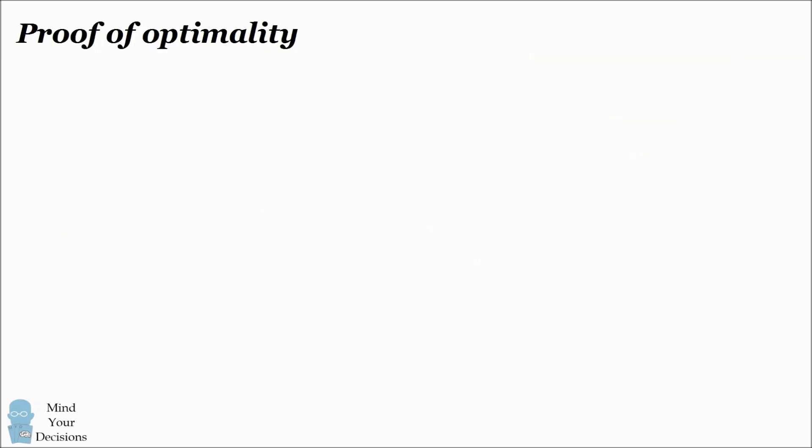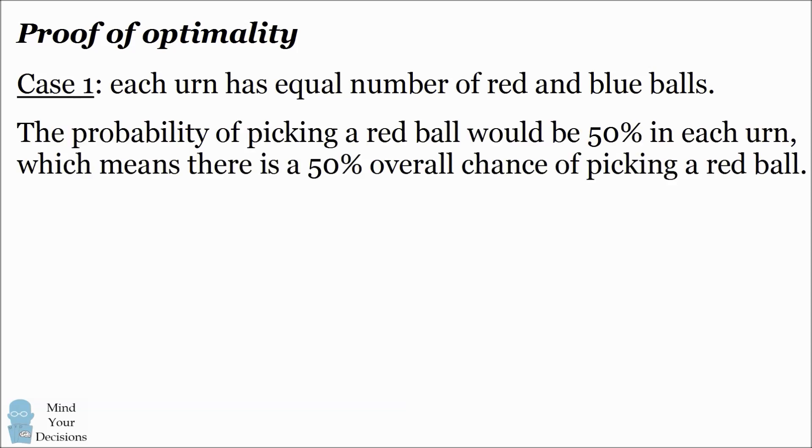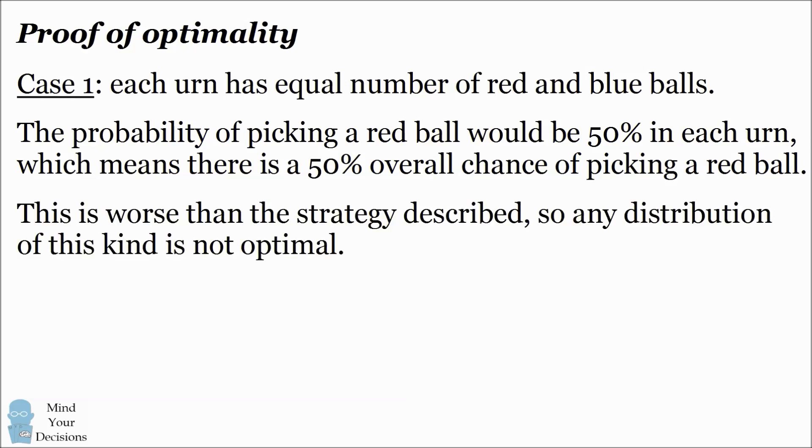There are two cases to consider. First imagine a distribution of balls which places an equal number of red and blue balls in each urn. There is a 50% chance of selecting a red ball from each urn, which means there's an overall 50% chance of selecting a red ball. The success rate in this strategy is worse than the strategy we just described, so any distribution of this kind is not optimal.